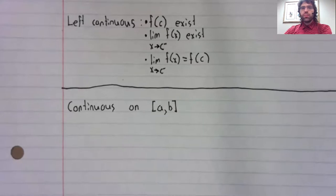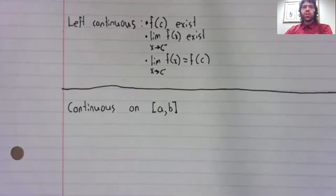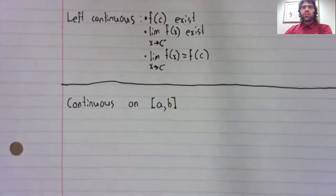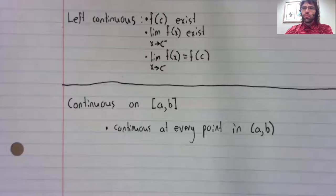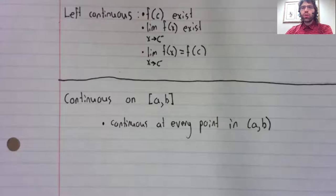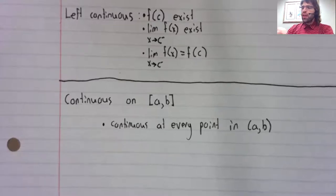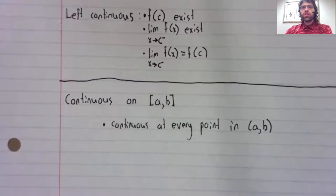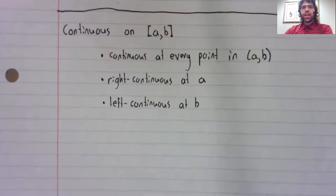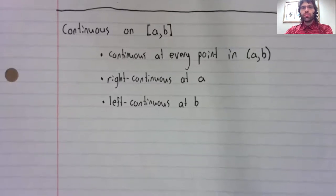What does it mean for a function to be continuous, not at a point, but on a closed interval? Well, it simply means that it's continuous at every point in the interval, except that for technical reasons, at the end points, we talk not about continuity, but of left and right continuity.